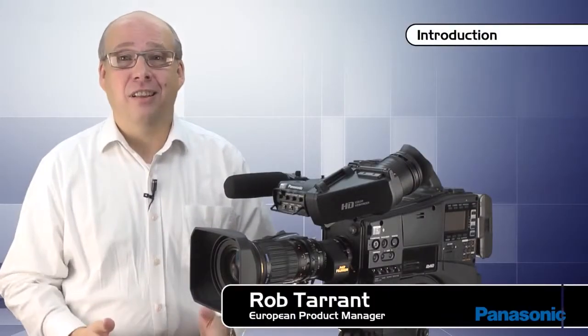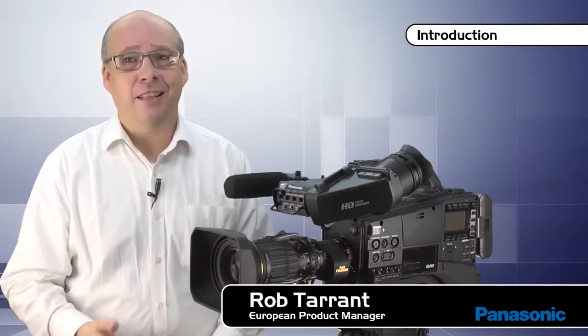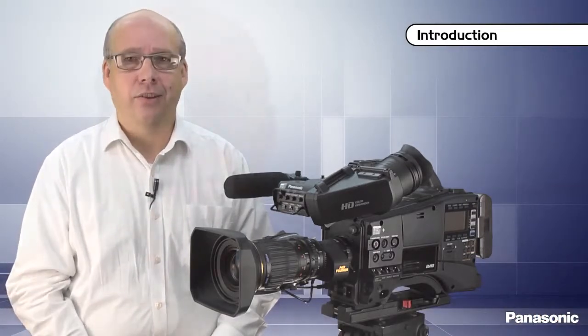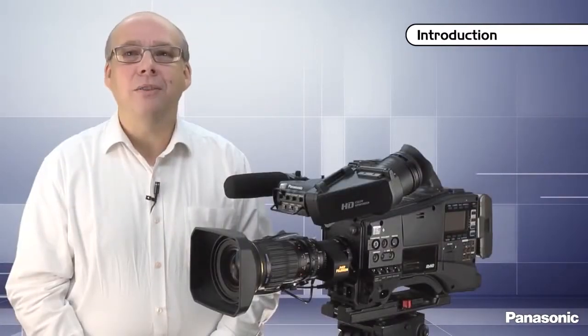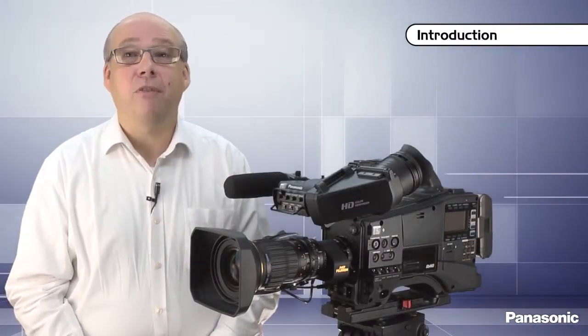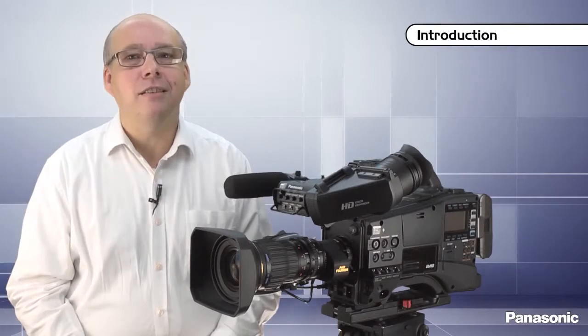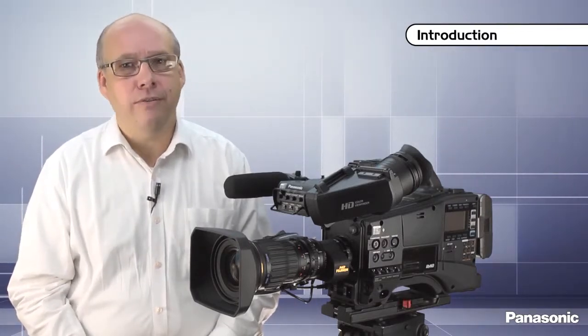The AG-HPX600 is the newest member of the P2HD camera recorder range. This two-third type camera allows professionals to use their existing HD or even SD two-third type lenses. Marking a milestone in technology developments from Panasonic, our engineers have developed the camera in line with a new user-friendly concept, considering the positions of the connectors, the user interface and the possibilities to tailor the camera with a range of hardware and software updates.